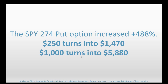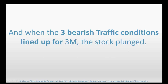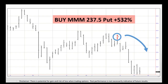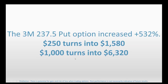The SPY was one market where we recommended puts with the three red lights, with $250 growing to $1,470 or $1,000 turning into $5,880. When the three bearish traffic conditions lined up for 3M, the stock ended up plunging. We recommended buying the 3M 237.5 puts, and those jumped in value by 532%: $250 would have grown to $1,580, or $1,000 would have turned into $6,320.